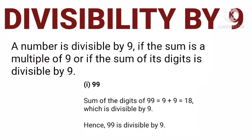A number is divisible by 9 if the sum of its digits is divisible by 9, or a multiple of 9. For example, 99: the digit sum is 9 plus 9 equals 18. Is 18 a multiple of 9? Yes, it is. So when we divide 99 by 9, the remainder is 0.